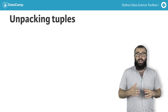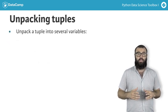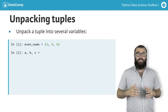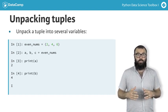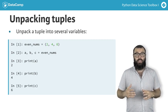You can also unpack a tuple into several variables in one line. Doing so means that you assign to the variables a, b and c the tuple values in the order that they appear in the tuple.